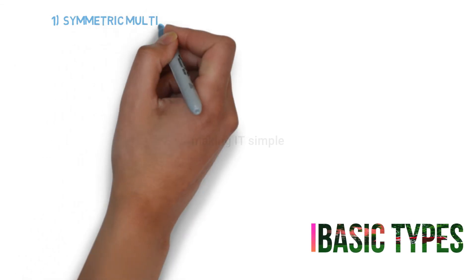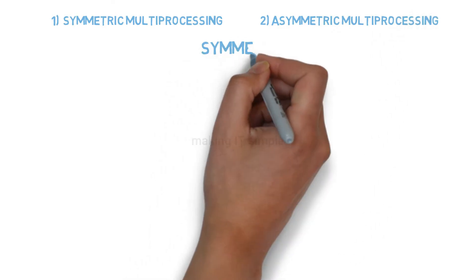There are two types of multi-processor operating system. One is symmetric and other one is asymmetric. Let's first see about the symmetric one.